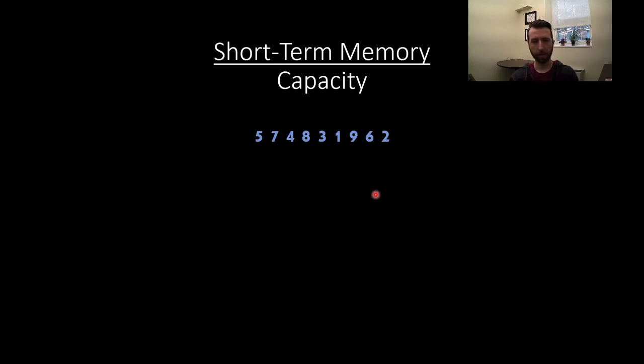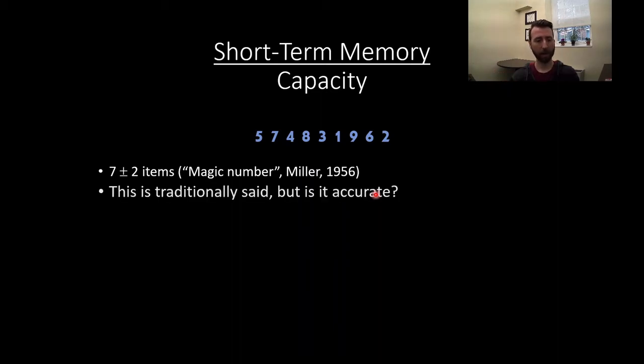So we have nine numbers here. Most of you probably remembered somewhere between five and all nine of them. That's the magic number that was established by Miller in the 50s, that most people's short-term memory holds about seven plus or minus two items at a given time. So this is what we say, but is it necessarily completely accurate?